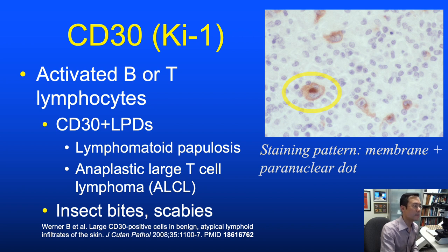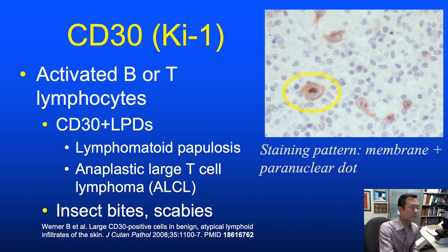CD30, also known as KE1, is a lymphocyte activation marker present in B- or T-cells, but its primary role in dermatopathology is in primary cutaneous CD30-positive lymphoproliferative disorders—including lymphomatoid papulosis at one end of the spectrum and primary cutaneous anaplastic large cell lymphoma at the other. CD30 can also be elevated in reactive processes like insect bites and scabies. The typical staining pattern shows large lymphocytes with prominent nucleoli and characteristic membrane and paranuclear dot staining.